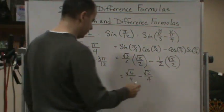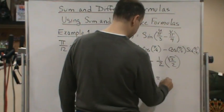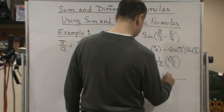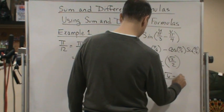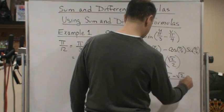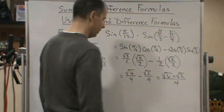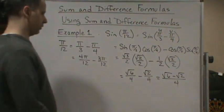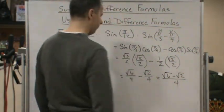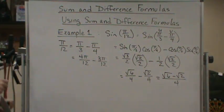And then the best we can do is combine these in one fraction. And we'll write the final answer as the square root of 6 minus the square root of 2 all over 4. And that's the exact answer. Alright, have a great day.